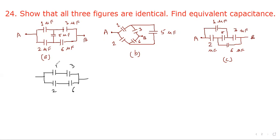Then it can be simplified. Now consider this case. Here again, 1 upon 2 equal to 3 upon 6. So this 5 microfarad capacitor will be removed and we will get the same circuit.